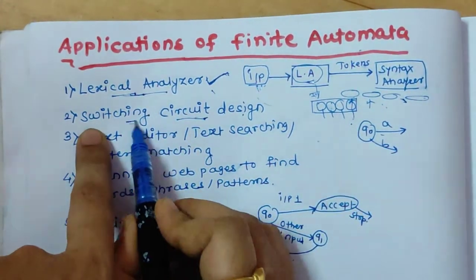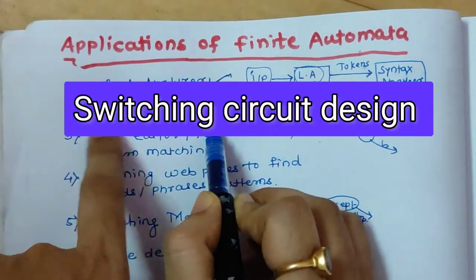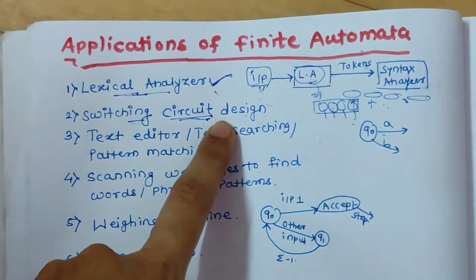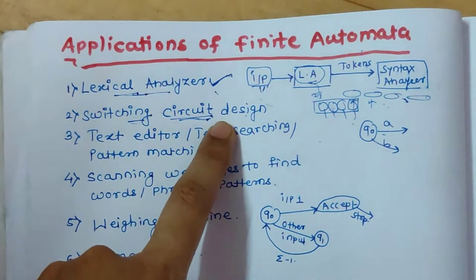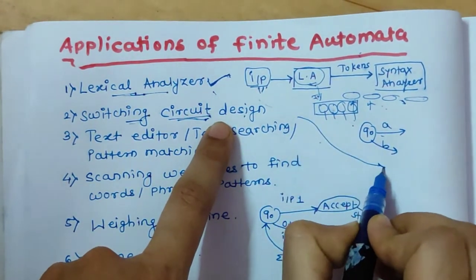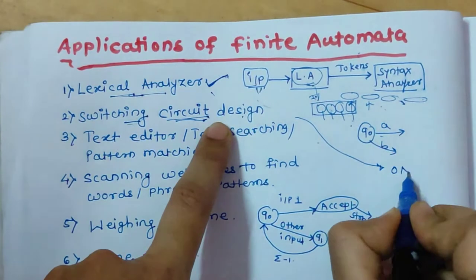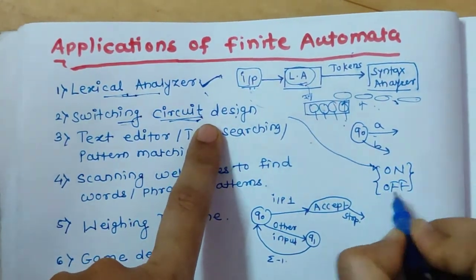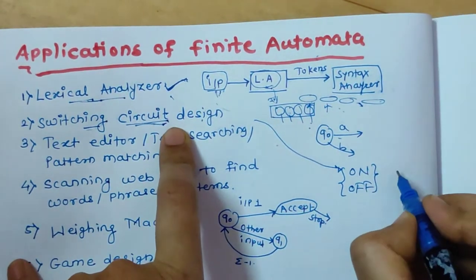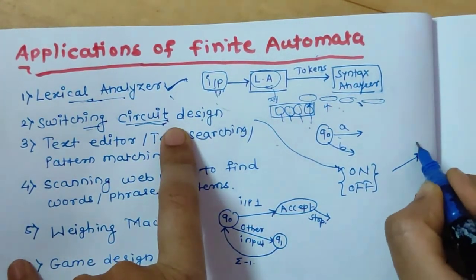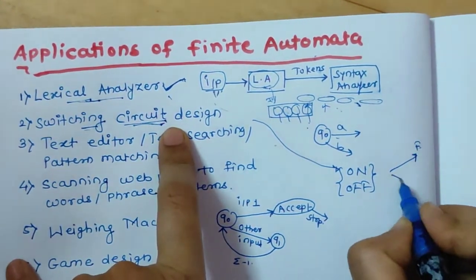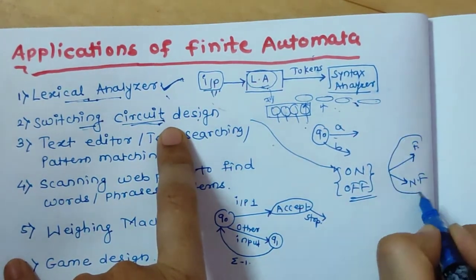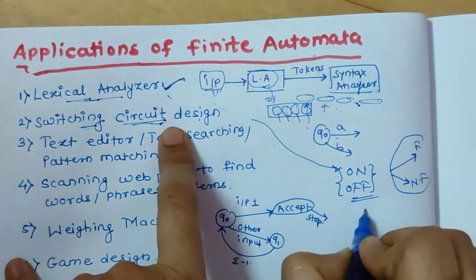The next application of finite automata is switching circuit design. In any circuit, the basic idea is when the circuit will be on and when the circuit will be off. This is similar to the concept of finite automata — when we reach the final state and when we reach the non-final state. The same logic is applied here in switching circuit design.